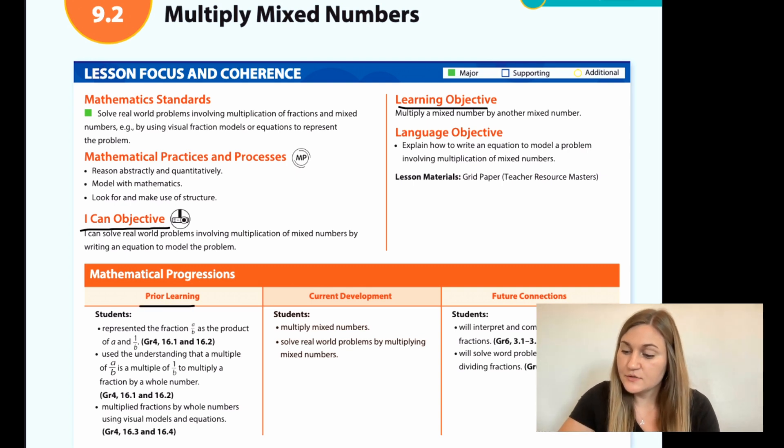The prior learning is that students represented the fraction A over B as the product of A and 1 over B. Students used the understanding that a multiple of A over B is a multiple of 1 over B to multiply a fraction by a whole number. And students multiplied fractions by whole numbers using visual models and equations.